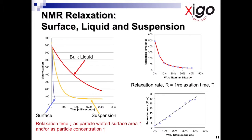In large, high-field, high-resolution NMR instruments — the 300, 400 MHz, half-million-dollar instruments — you can do solid-state NMR. In our case, this surface relaxation is so fast that we cannot even see it, so we can ignore it. What we can measure are the relaxation for the suspension and the bulk liquid, and we can see the difference: the relaxation for the bulk liquid is much slower than that for the bound liquid in the suspension.